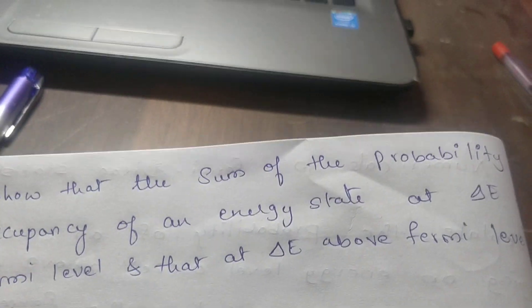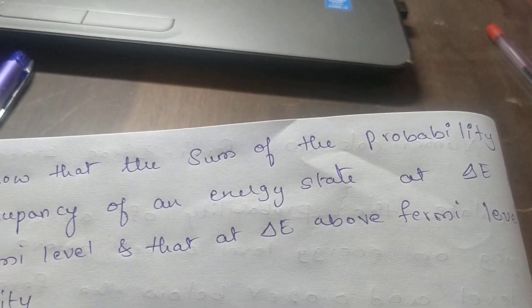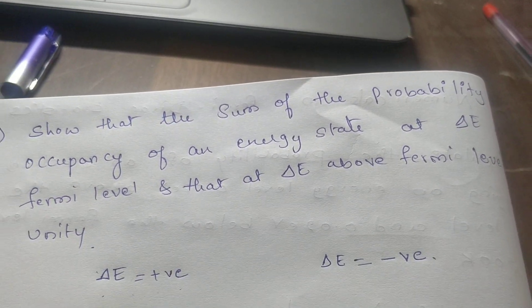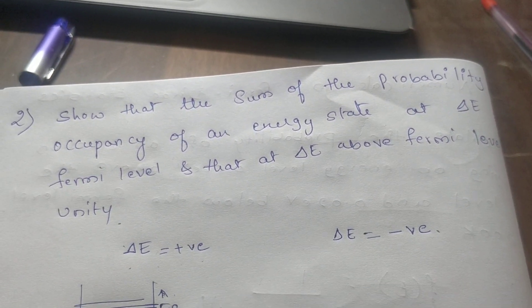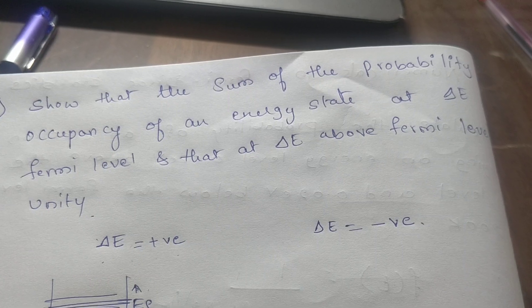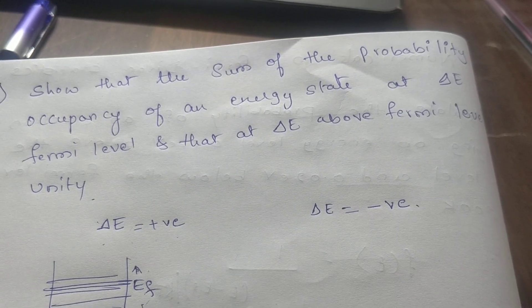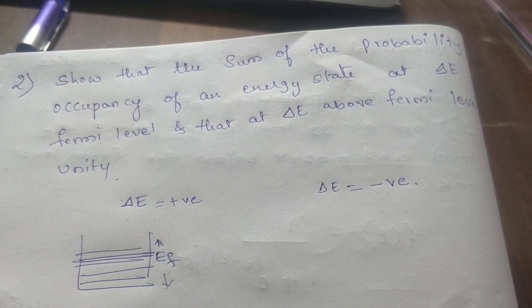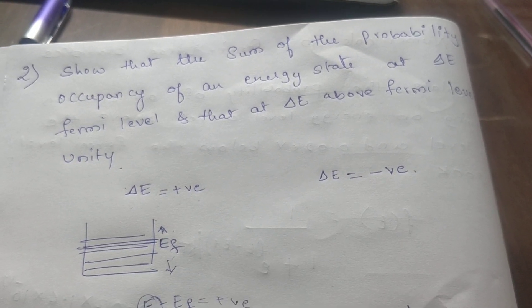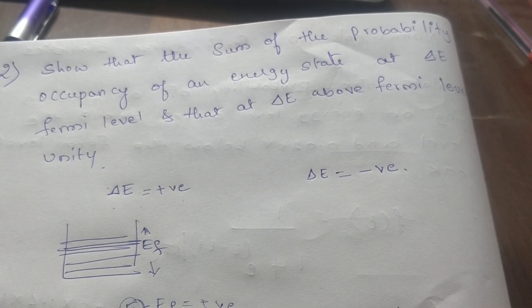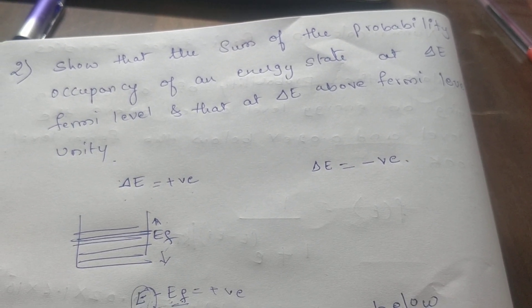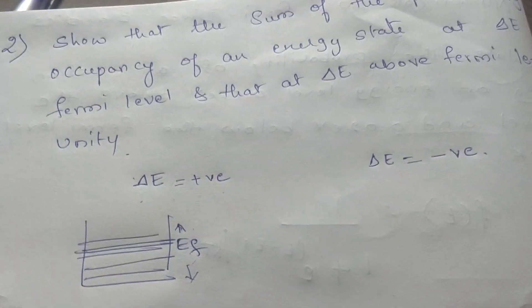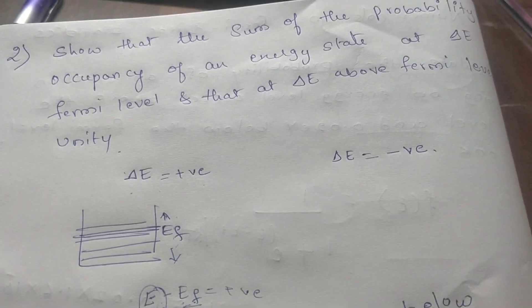So we can conclude that the sum of the probability of occupancy of an energy state at delta E below as well as above the Fermi level is unity.